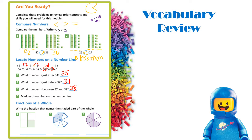Now let's review fractions — write the fraction that names the shaded part of the whole. For number seven, my square has four equal parts, so my denominator is four. Only one part is shaded, so my numerator is one: one fourth. For number eight, let's count the total equal parts: one, two, three, four, five, six, seven, eight — it's an octagon! My denominator is eight. Three of those parts are shaded, so three eighths are shaded.